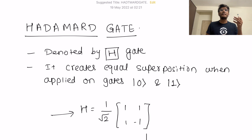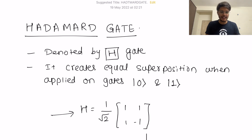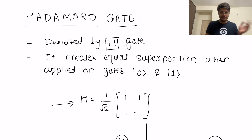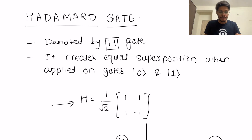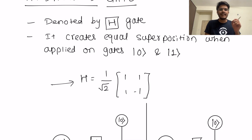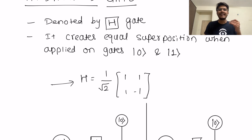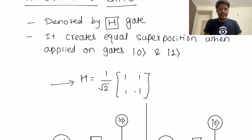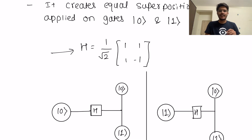The Hadamard gate is denoted by H, so wherever you see the H symbol in a quantum circuit — whether in IBM Quantum Lab or elsewhere — that represents the Hadamard gate. It creates equal superposition when applied on state |0⟩ and state |1⟩, meaning the qubit will be in states |0⟩ and |1⟩ with equal probability. The Hadamard gate is defined by the matrix (1/√2) × [[1, 1], [1, -1]], a 2×2 matrix similar to how the X, Y, Z gates are defined.